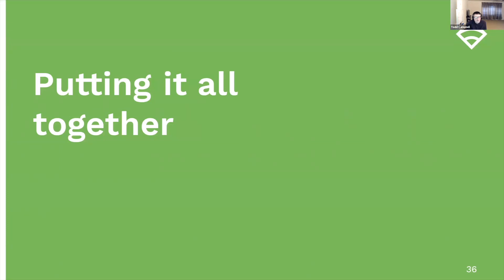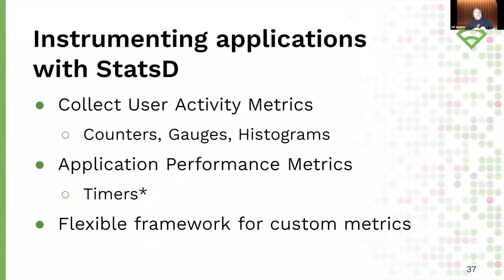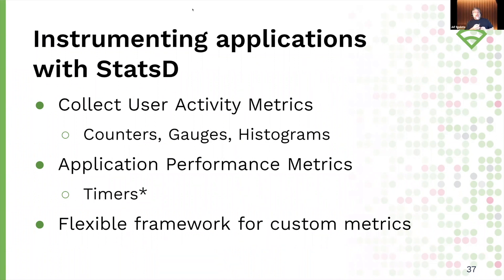Jeff is going to show us an example web app and instrumenting it. Those were great demos on the basics of using the Datadog implementation of StatsD. I'm going to use those elements in an actual web application. I'm going to show examples of counters, gauges, and histograms to collect user activity metrics for a web application. More importantly, I'm going to show how to use StatsD timers so you can get performance metrics out of your web application functions. StatsD is really good at being a flexible framework so that you can get custom metrics out of your web applications for exactly what you need in terms of instrumentation.